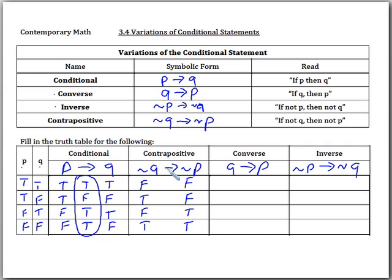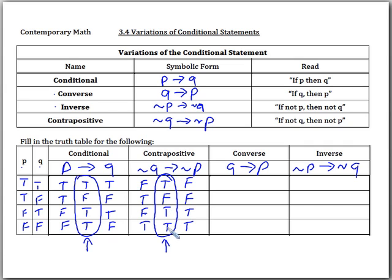Then we perform our conditional: false arrow false is true, true arrow false is false, false arrow true is true, and true arrow true is also true. So the contrapositive truth table is: true, false, true, true — the same as the conditional. That tells us the conditional and the contrapositive are equivalent statements. When you say 'if P then Q' and 'if not Q then not P,' you're actually saying the same thing.